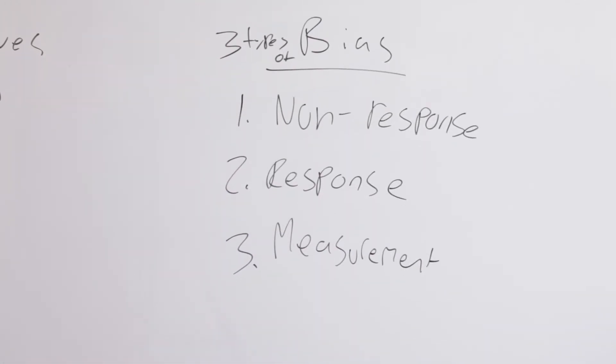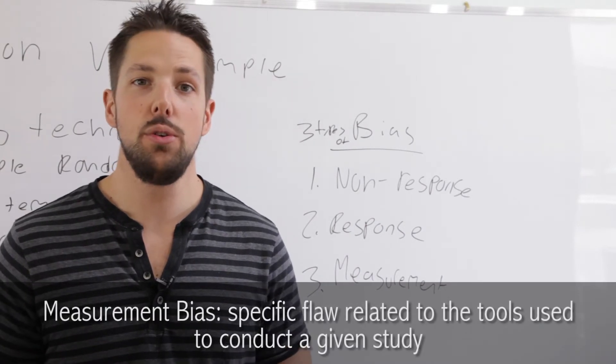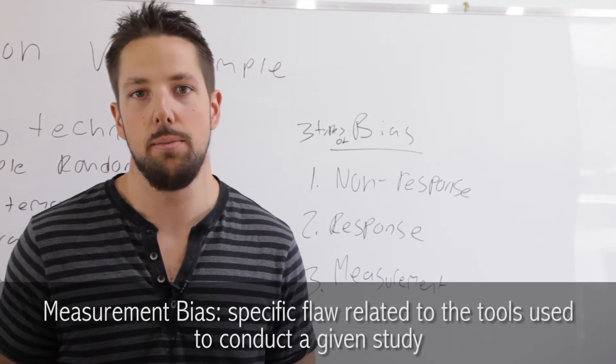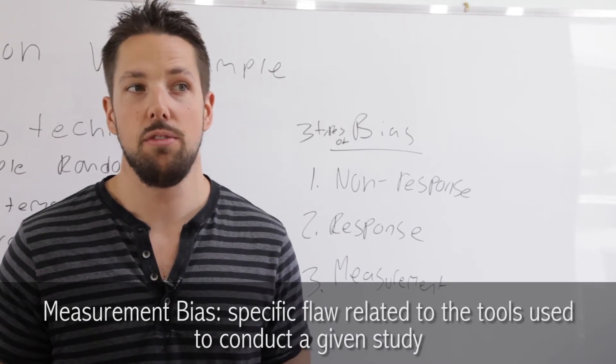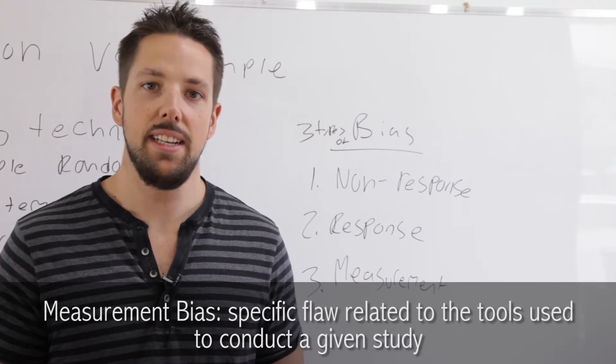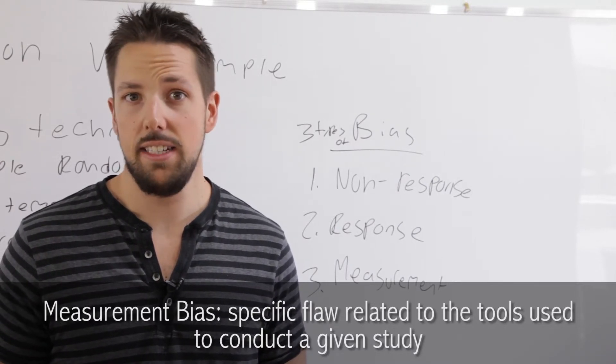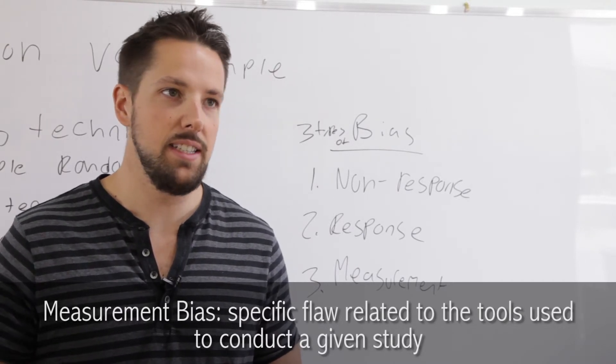The third type we have is measurement bias. This occurs when the actual tools you're using in your study are biased in some sort of way. If you're measuring the time it takes someone to run around a track and the stopwatch you're using consistently runs five seconds faster, that's measurement bias because all your answers are going to be five seconds too fast.